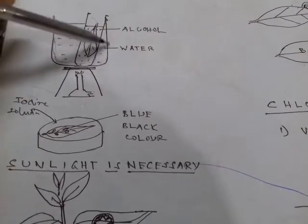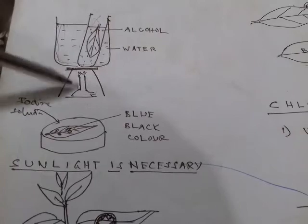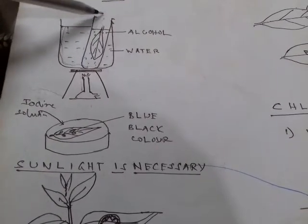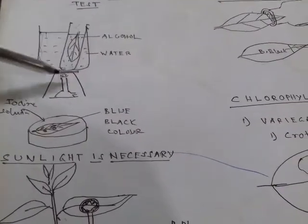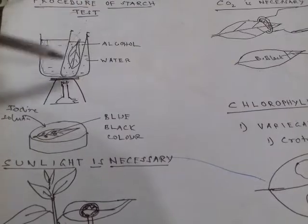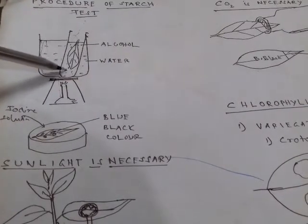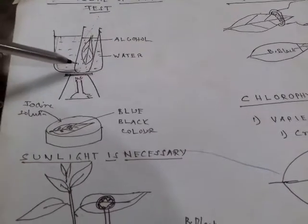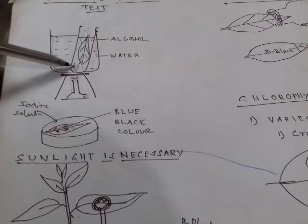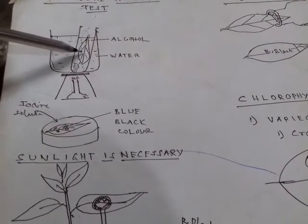This test tube is indirectly boiled in a water bath — a larger beaker containing the test tube. It is heated indirectly because alcohol is very volatile and inflammable; direct flame could ignite the alcohol vapors. When heated continuously, the alcohol inside the test tube turns green and the leaf turns white, as alcohol is an organic solvent that dissolves the chlorophyll.